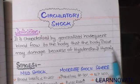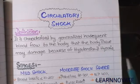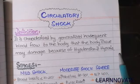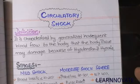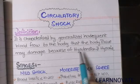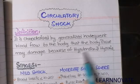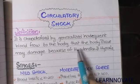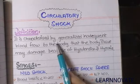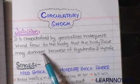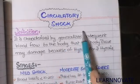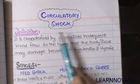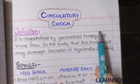Hypoxia is another topic I have discussed in a separate video covering its types, conditions, and causes. The hypotension and hypoxia of the tissues cause tissue damage due to decreased blood flow, resulting in circulatory shock.